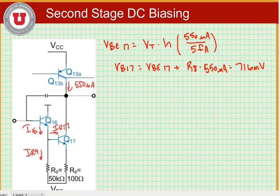Now we know what the voltage at the base to emitter voltage for 17, hence we can find IR9. IR9 is equal to VB17 divided by R9, which is equal to 14.3 microamps.